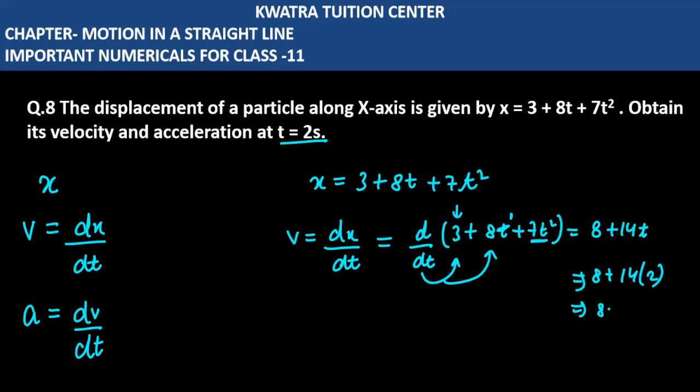So you get 8 plus 28, which is 36 meter per second.